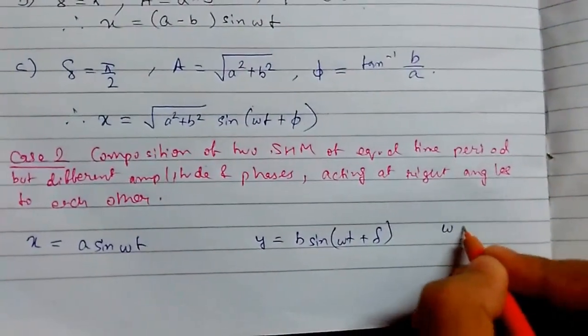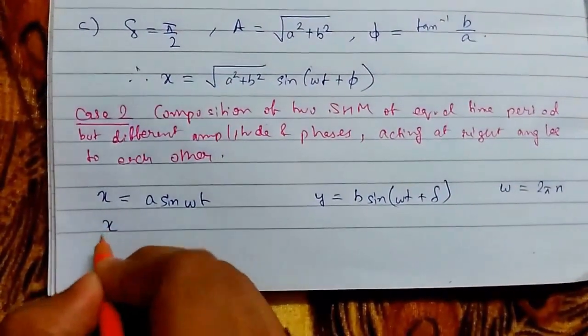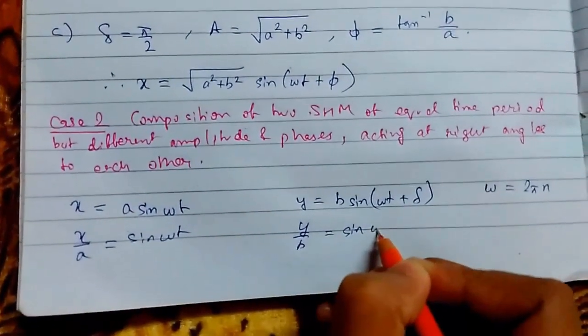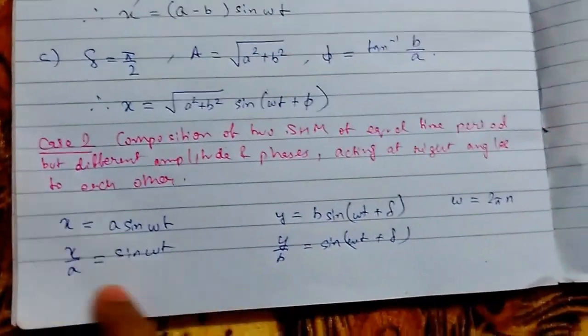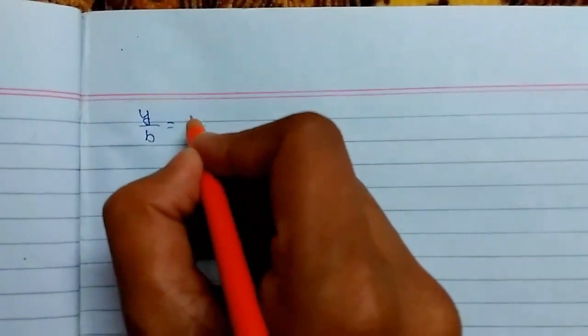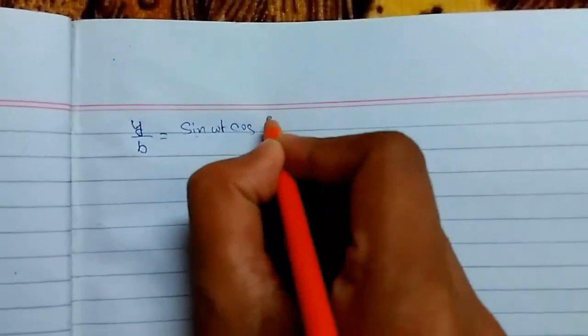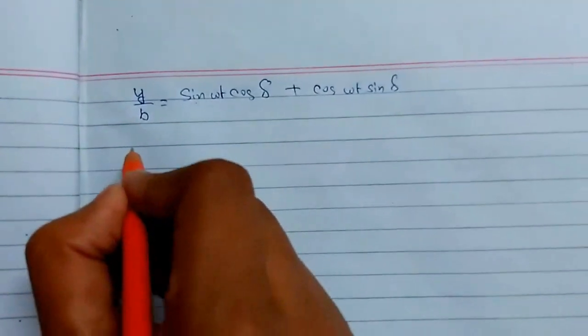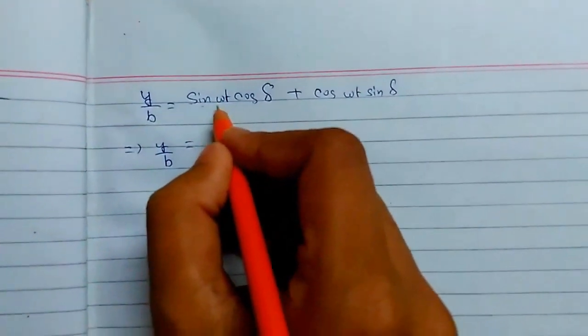We convert: x/a equals sin(ωt) and y/b equals sin(ωt + δ). Expanding y/b equals sin(ωt)cos(δ) plus cos(ωt)sin(δ). Since sin(ωt) equals x/a, we replace it: y/b equals (x/a)cos(δ) plus cos(ωt)sin(δ).